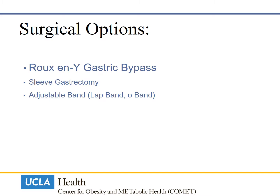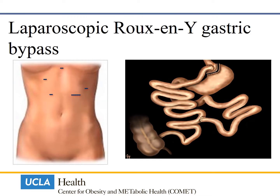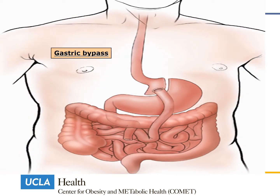Here are the surgical options. One option is laparoscopic Roux-en-Y gastric bypass surgery. Almost all cases are done laparoscopically now, which means much smaller incisions, significantly reduced pain, and faster recovery. During this procedure, the stomach is divided into two portions; a small pouch with 30 to 45 cc of volume is then connected to the small bowel. The food bypasses the larger part of the stomach, and the surgeons do not remove any part of the stomach.